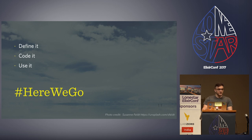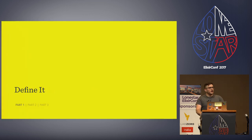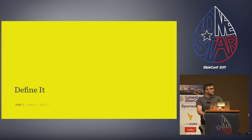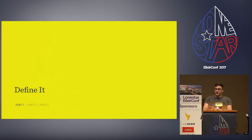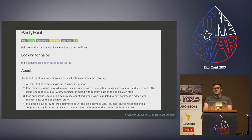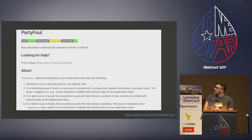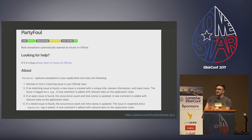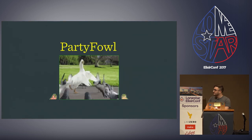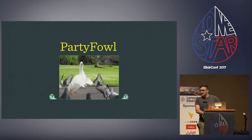The talk: we're going to define what we're going to build, we're going to code it, and then we're going to use it in a Phoenix application. Backstory: one day me and a coworker were working on some OSS stuff and we had a Rails gem called PartyFile, which would automatically log your exceptions to GitHub as issues, find duplicate issues, add comments, and do some nice assigning. We said, why don't we do this for Phoenix? Phoenix is like a bird, so PartyFile — that's what we're going to build today.